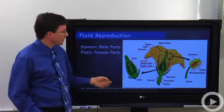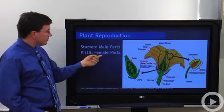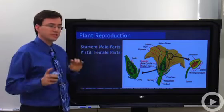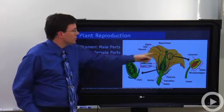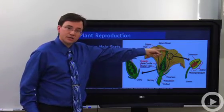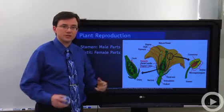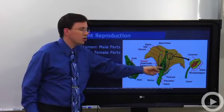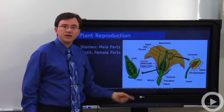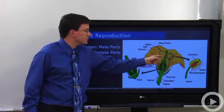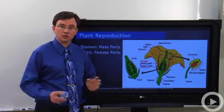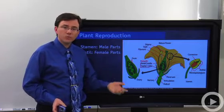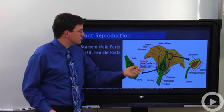The female parts are collectively called the pistil. They include several different regions: you'll have the stigma on top of this long stock called the style, and down at the base you'll have the ovaries. One ovary plus its portion of the style and its portion of the stigma is called a carpel.